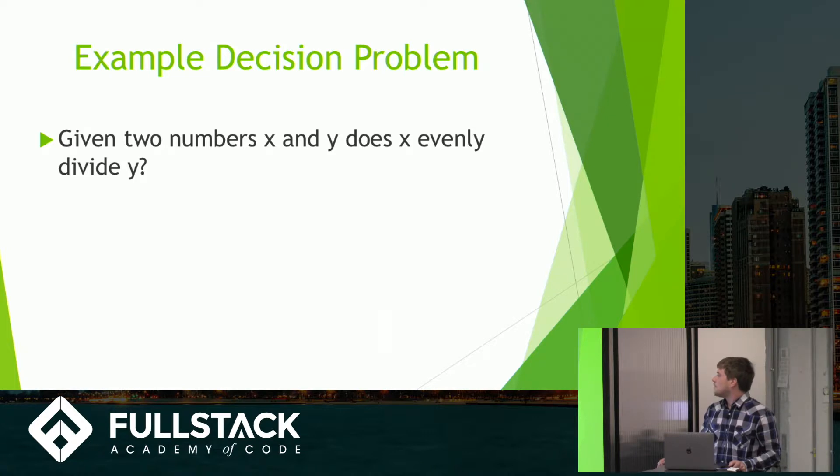So with this you just use the long division algorithm and you take x divided by y and if there's zero decimals after, you can say yes, it evenly divides. If there's decimals, you say no. And since you always get a yes or no, it's considered decidable.